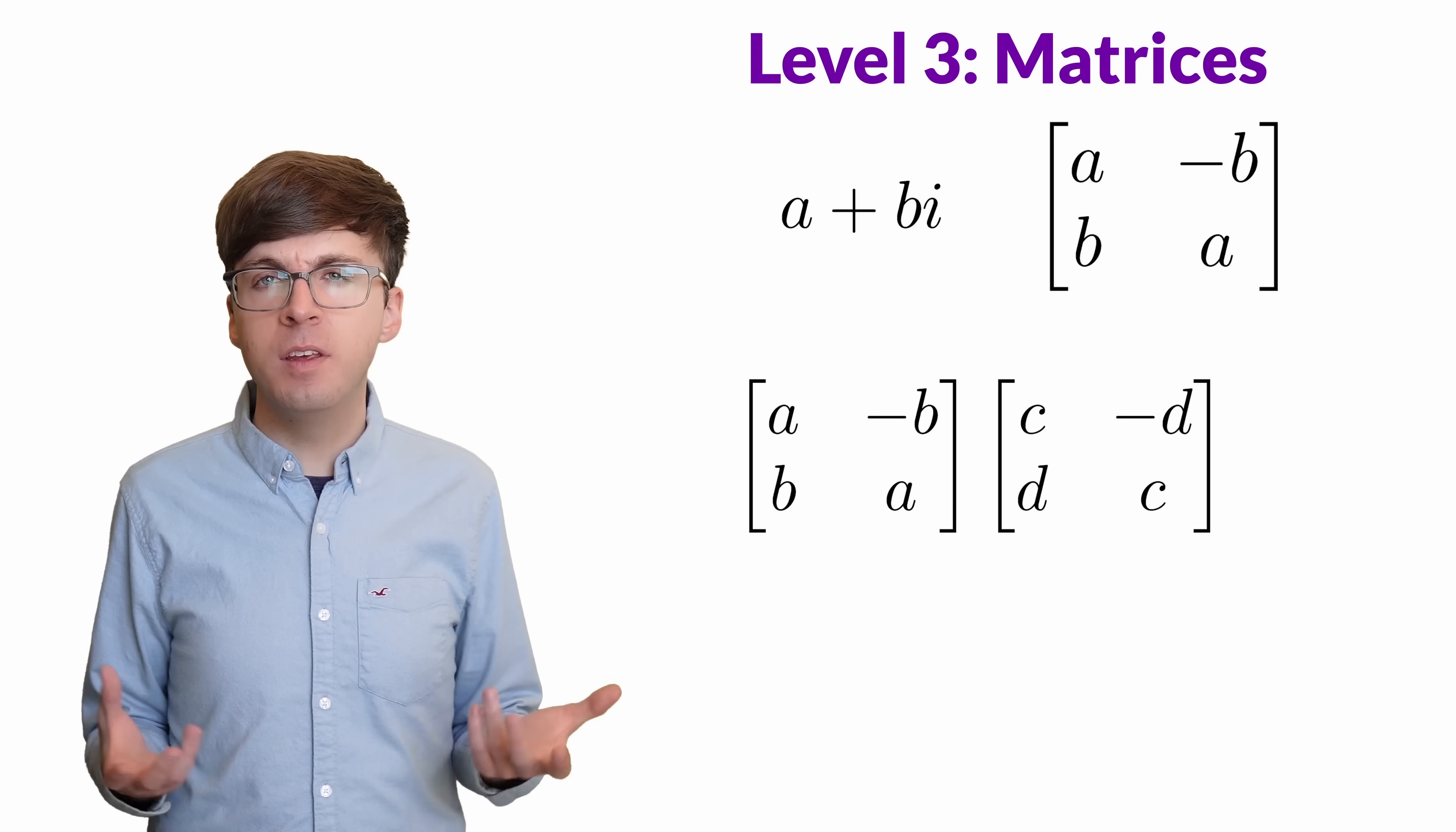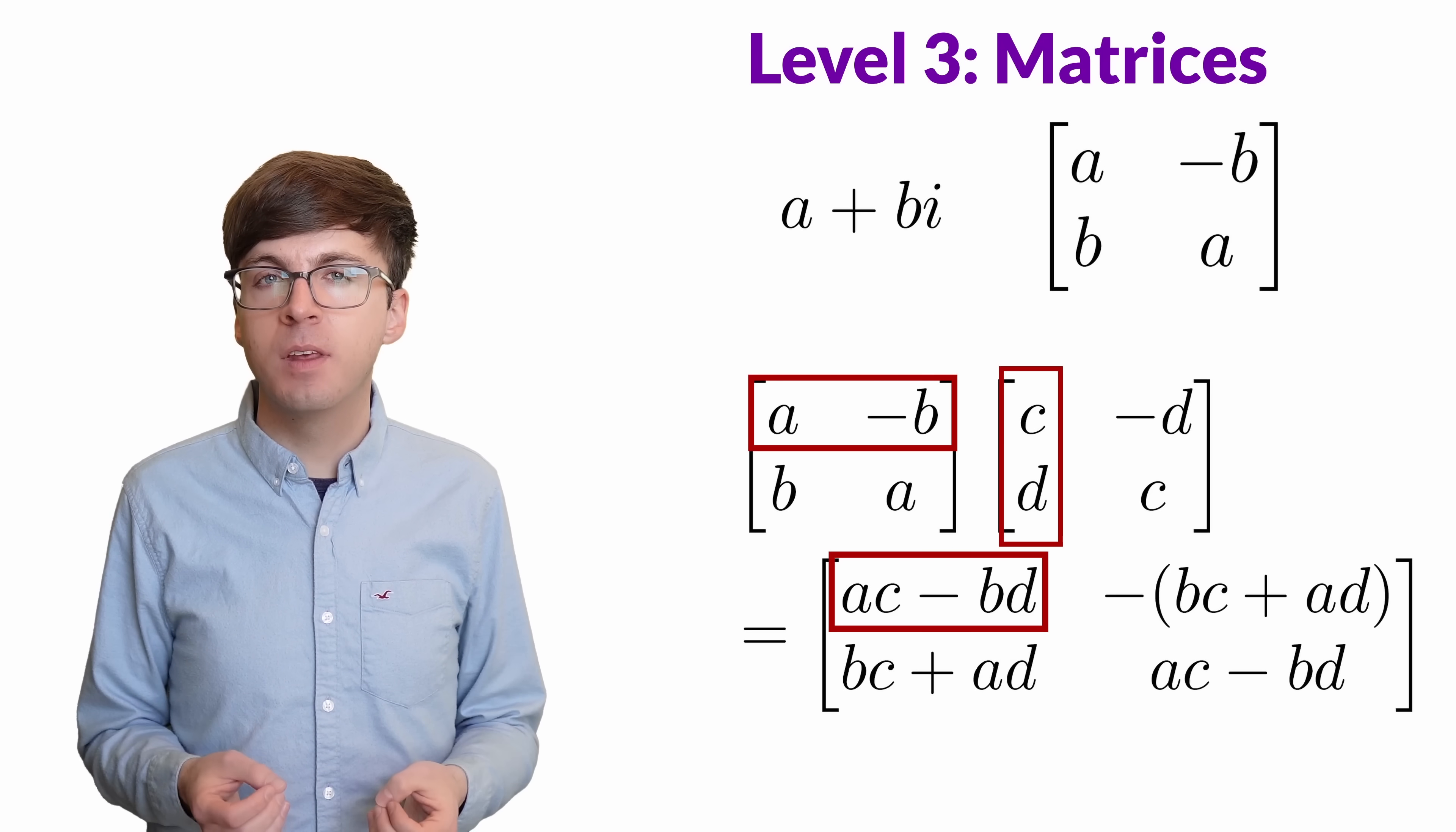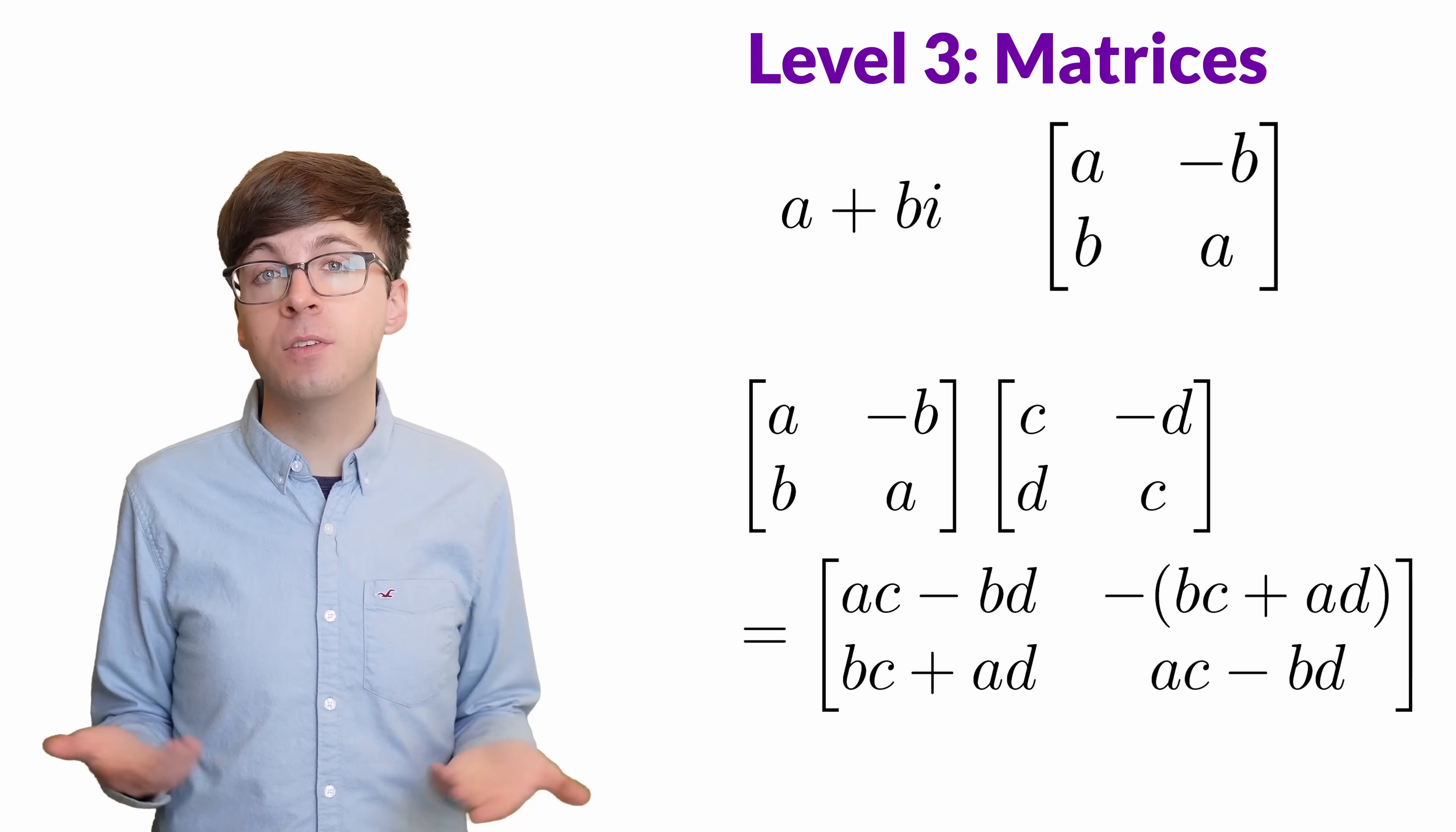Say we want to multiply these two matrices. We start by looking at the first row of the first matrix and the first column of the second matrix. We multiply element by element and add up the results. This gives us the entry in the first row and first column. And we can repeat this process with the first row and second column to get that entry of the product matrix. And so on. We have a definition of complex numbers that doesn't require the letter i. All the entries in all of these matrices are real numbers.